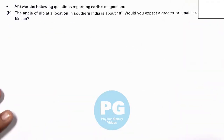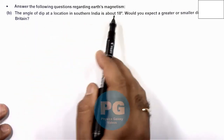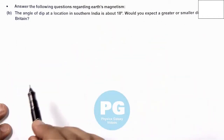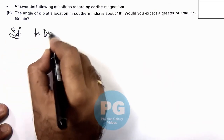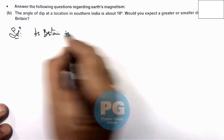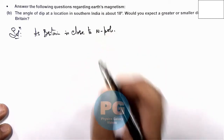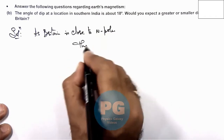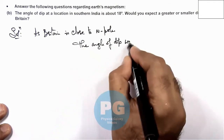If we come to part B of this exercise, where it is asking: the angle of dip at a location in southern India is about eighteen degrees — what would you expect, a greater or smaller dip angle in Britain? Here we can directly write that Britain is close to the North Pole. As it is close to the North Pole, the angle of dip will be more.